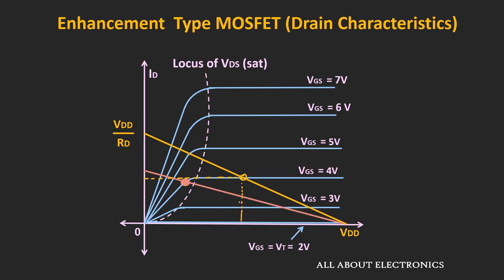For example, if Rd is too large, the operating point may shift towards the ohmic region. If Rd is too small, the operating point may shift towards Vdd. In either case, the voltage swing of the AC signal will get reduced. If we consider the green line, the maximum voltage swing will be equal to Vdd minus Vds. On the other end, if we consider the red line, the maximum voltage swing is equal to Vds minus 0. As the operating point moves towards the ohmic region or towards Vdd, the maximum voltage swing for the AC signal will get reduced. So to get the maximum voltage swing for the amplified output and to ensure that the MOSFET operates in the saturation region, the value of Rd should be selected properly.